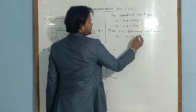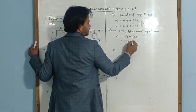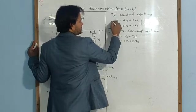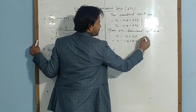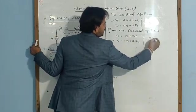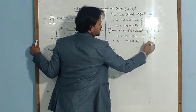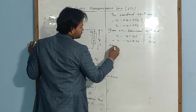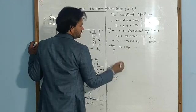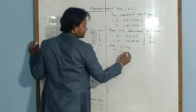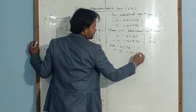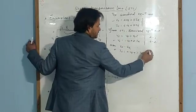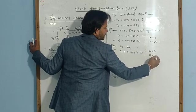Suppose Vs equals 1 into Vr plus Z into Ir. Comparing this equation with the standard form, we can find out: A equals 1 and B equals Z. Also, Is equals IR, which can be related as 0 into Vr plus 1 into Ir. Comparing again, C equals 0 and D equals 1.